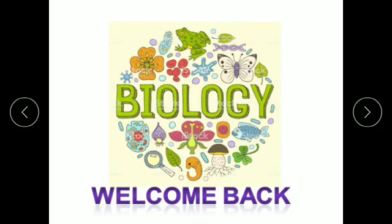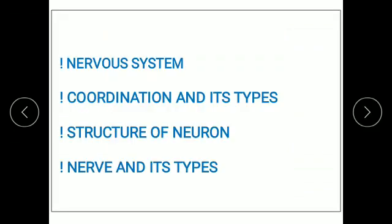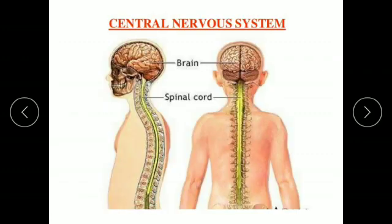Students, welcome back to the biology class. We are discussing the chapter Nervous System. In the previous session, we discussed about nervous system, coordination and its types, structure of neuron, nerve and its type. Today, we will be studying Central Nervous System.